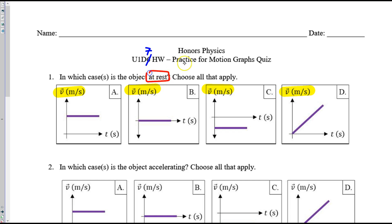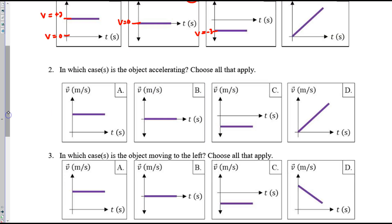I know the object is at rest when its velocity is zero. B is the only case where we have velocity equal to zero. Here in A, the velocity is perhaps positive three, and so forth. So the correct choice is B for number one.